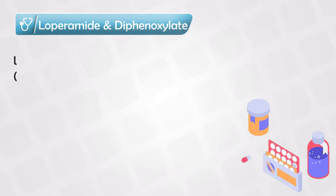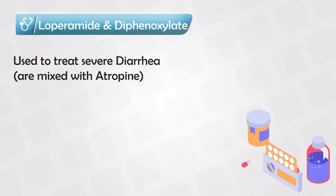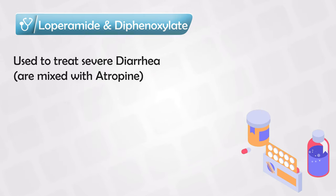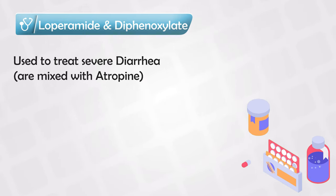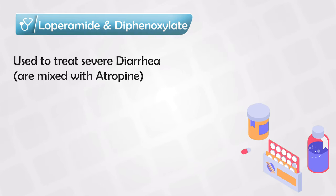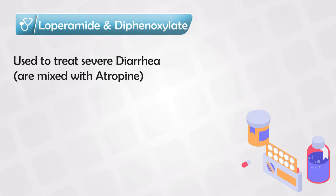Both loperamide and diphenoxylate are used as diarrhea treatments because they slow down the gut and prevent diarrhea symptoms. To prevent addiction and overuse of this medication, the same pill is often combined with atropine — so it has a little bit of atropine, and the majority is the opioid. If you take the medication in small amounts, you get the opioid anti-diarrhea effect, but if you take it in larger amounts, you will experience the atropine side effects.